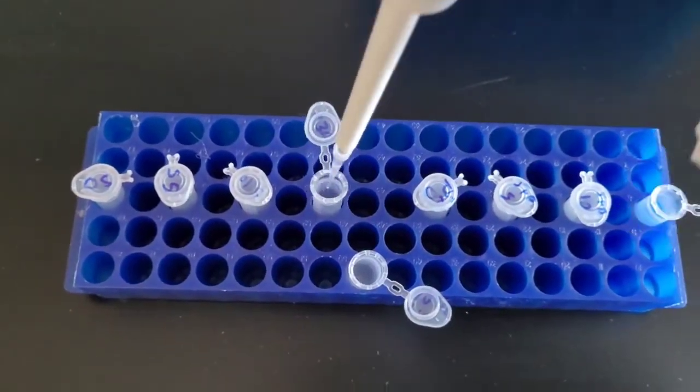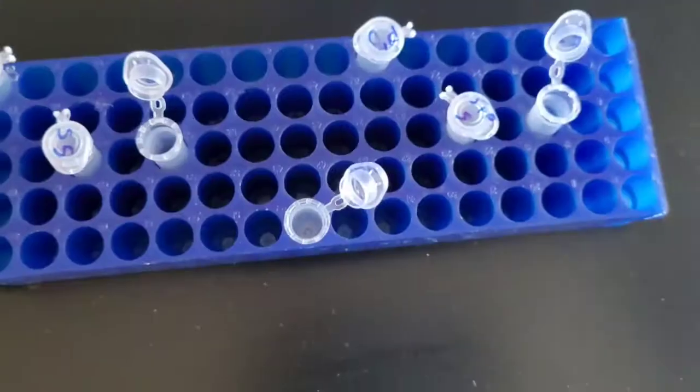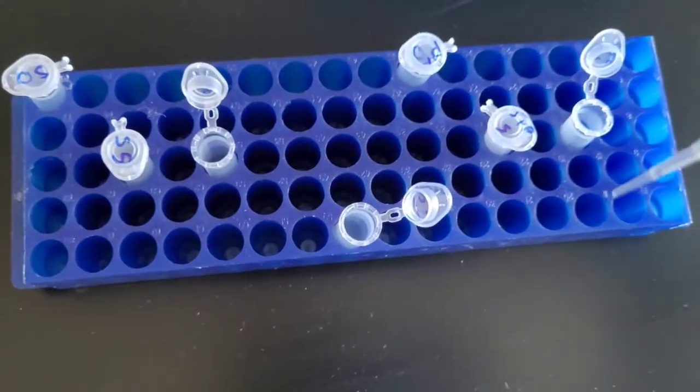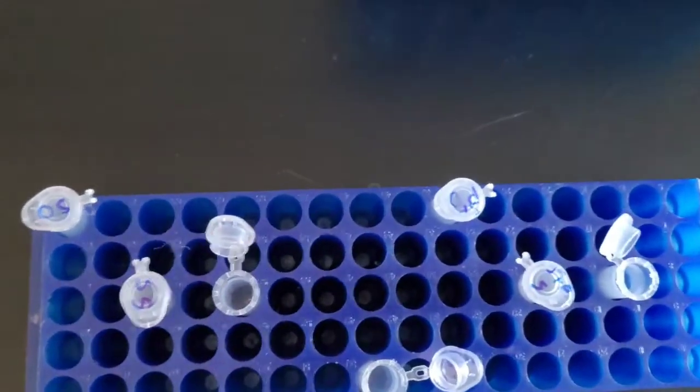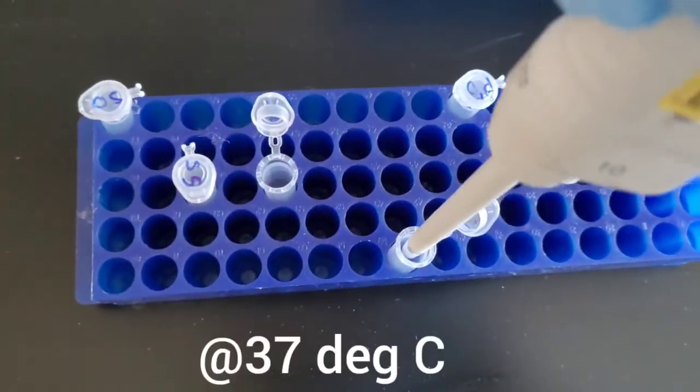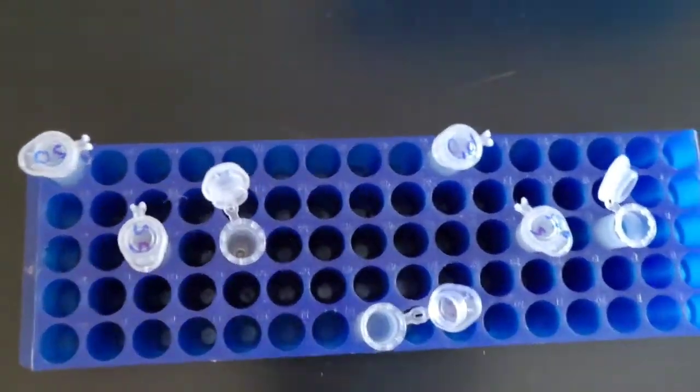of trypsin digestion. I'm going to mix in 0.5 microliters of my 1:10 trypsin and let it sit for 30 minutes at 37 degrees. Then after 20 minutes,